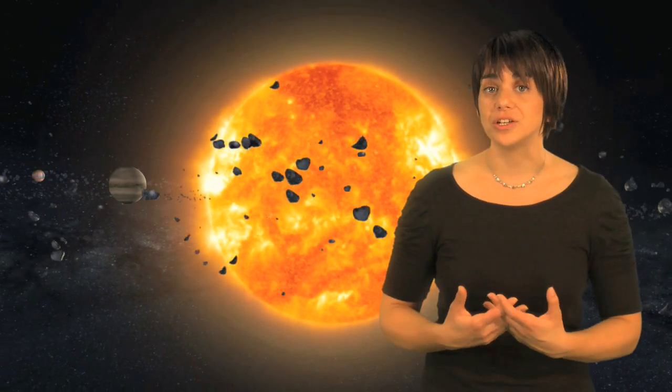All the planets in the solar system developed from the same material. But why do their atmospheres and surfaces vary so much?